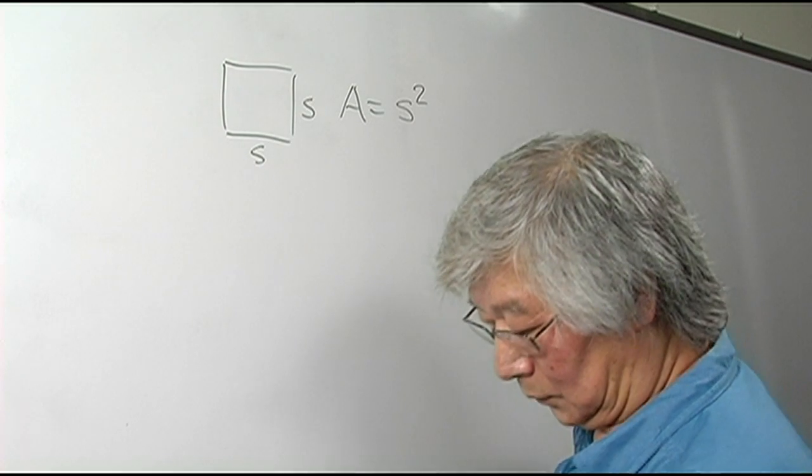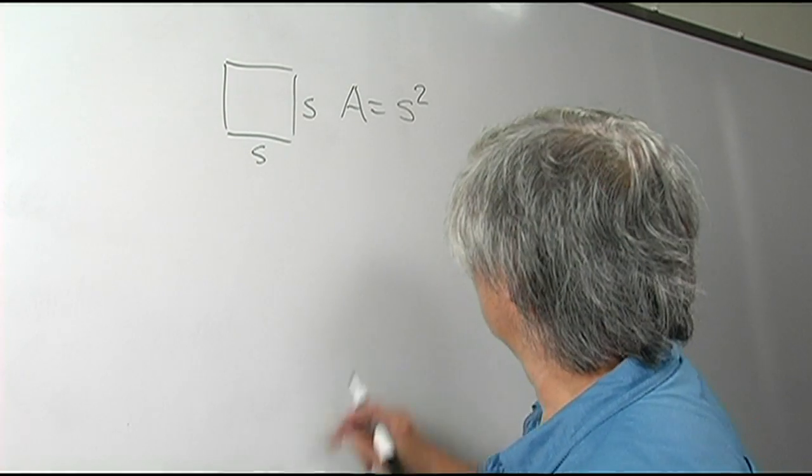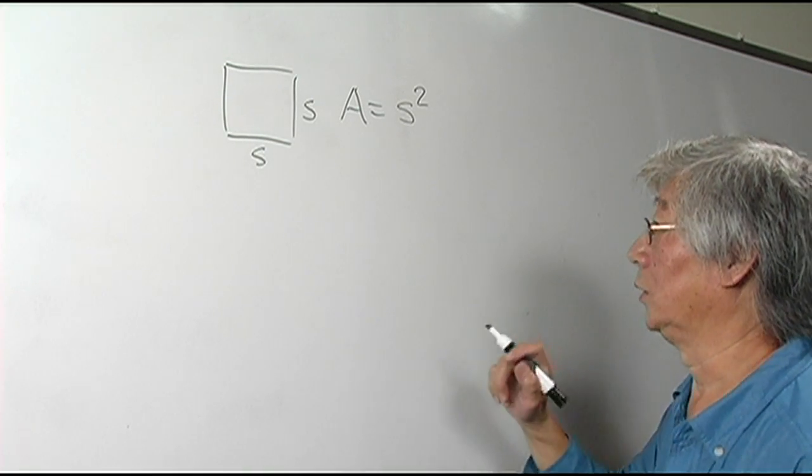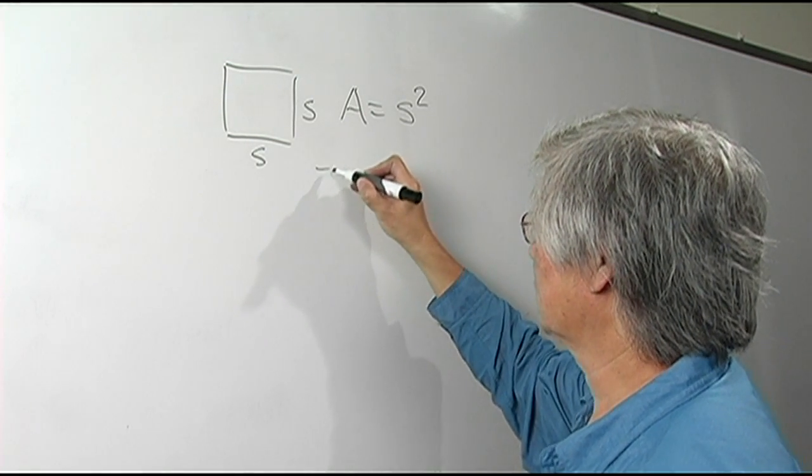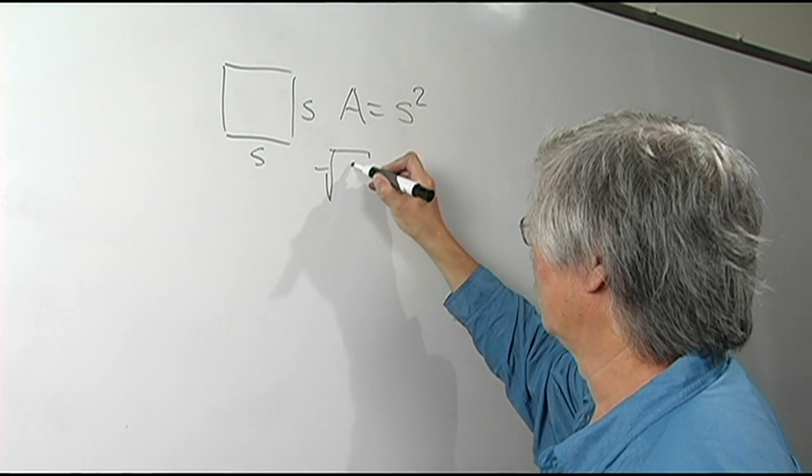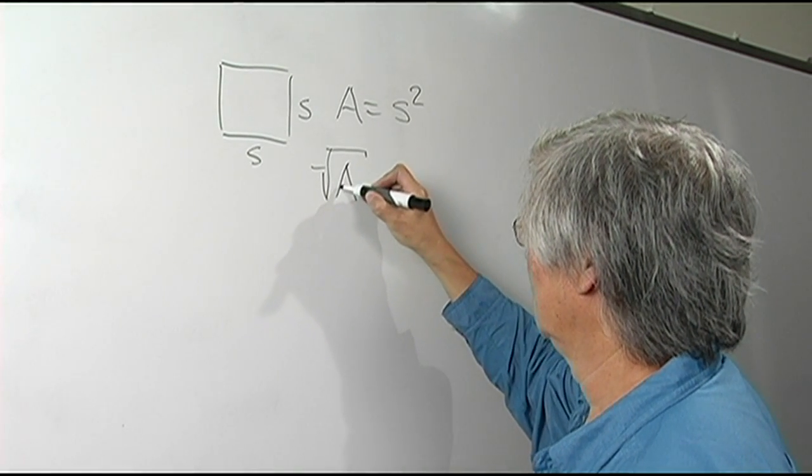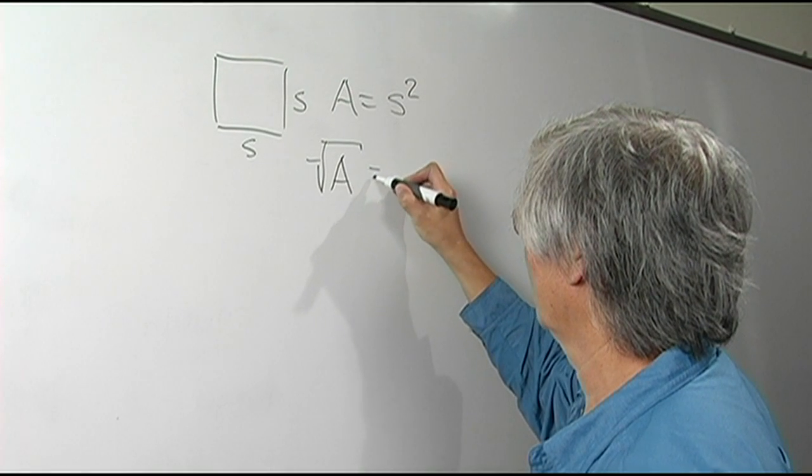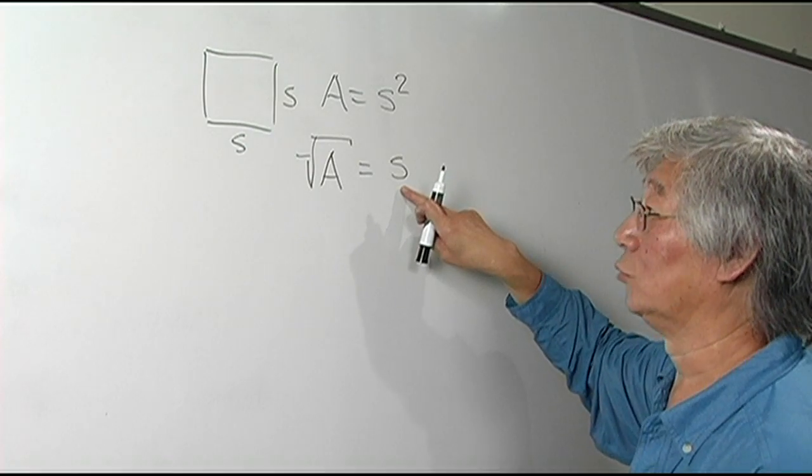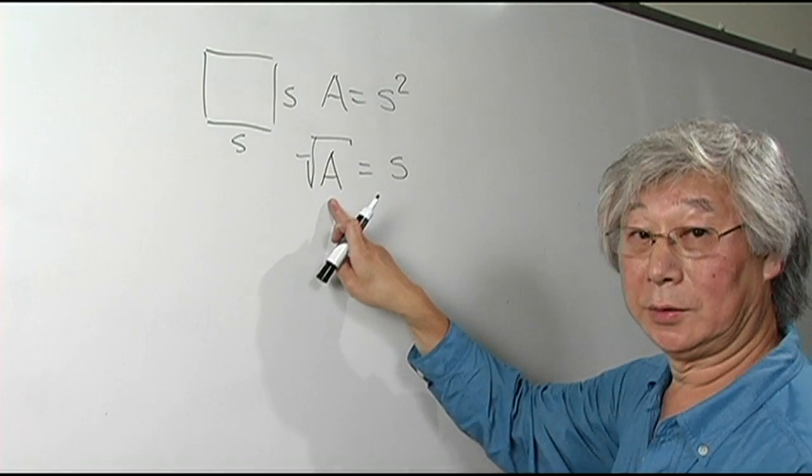Now I'm going to introduce something here. This symbol is called the radical sign. The radical of A is S. We refer to S as being the root of the area.